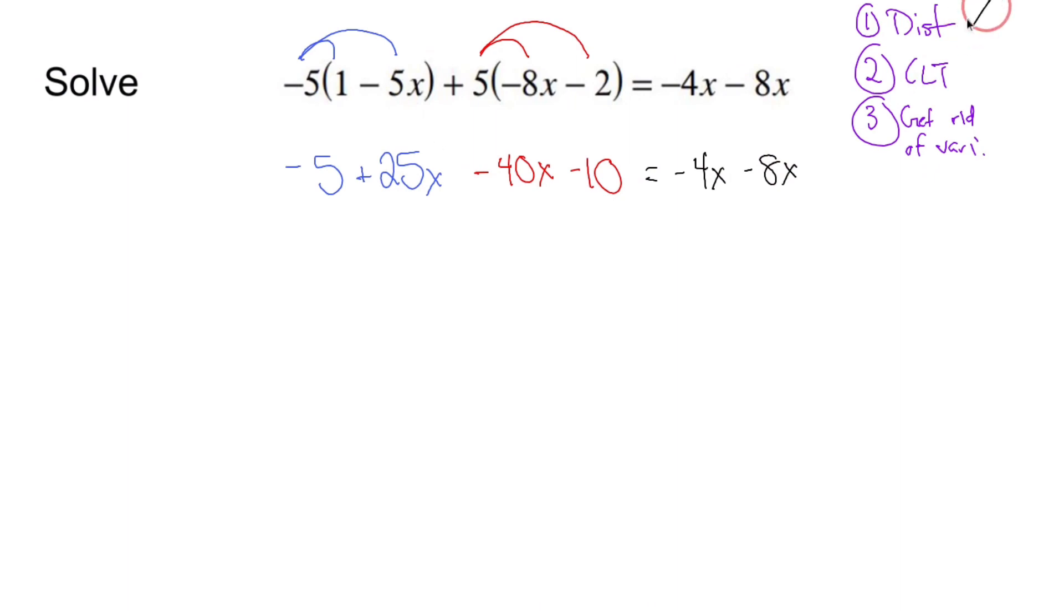Now is the time where I want to combine like terms. So on the left side, I see a negative five and a negative 10. Those are both regular numbers, negative five and negative 10 add up to negative 15. They're both negatives. And when you subtract a negative from a negative, you still get a larger negative. We now have positive 25 X minus 40 X, 25 X's minus 40 X's is minus 15 X's. So that's me combining like terms on the left.